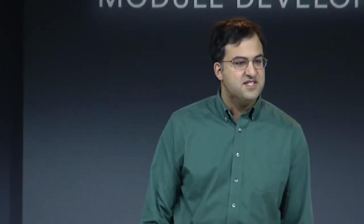EPM stands for electropermanent magnets. This is an exciting technology — it's kind of a cross between a permanent magnet and an electromagnet. A short pulse of current can turn on or turn off an EPM, but it doesn't require any power to stay in either the on state or the off state. This schematic shows how that works physically. The orange material is neodymium iron boron, a very strong magnet, and in both the on and off state, its magnetic field points the same direction — it's not changed by the pulse from the coil.